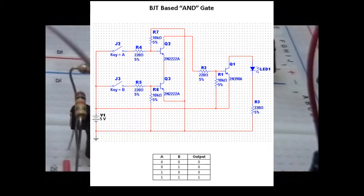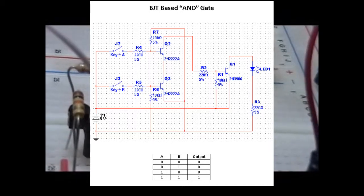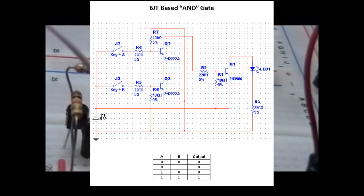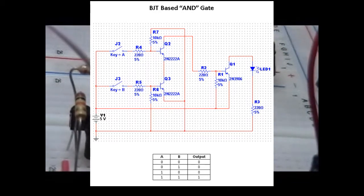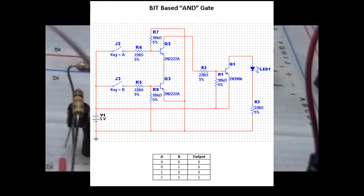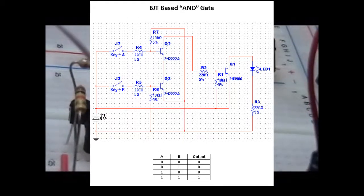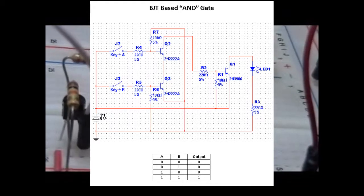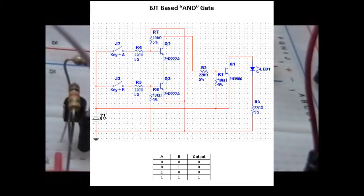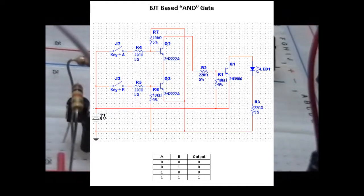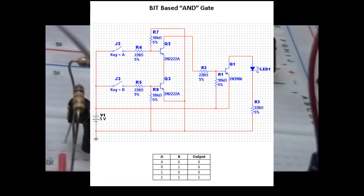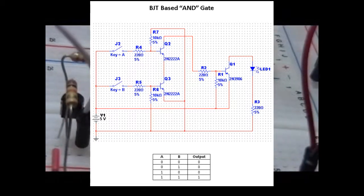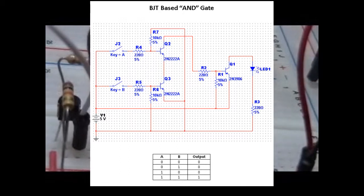So if either J2 or J3 is not closed, then the associated transistor is not operating and Q1 will be in an off state and nothing will go on. Both switches have to be closed for this to work. If you look at the bottom, you'll see the logic, the truth table, and the only condition in which an output is 1 is in the condition that both A and B are 1. So that's an AND gate.